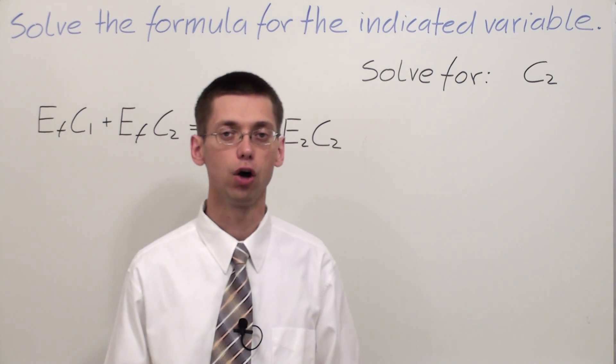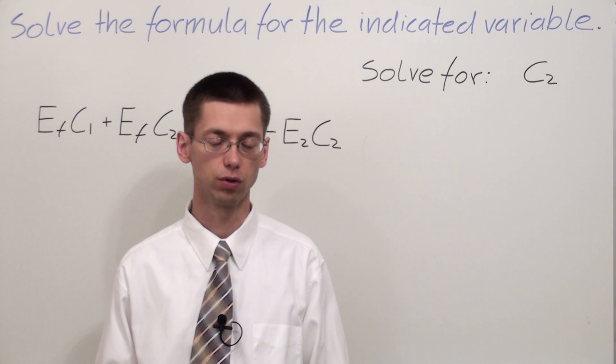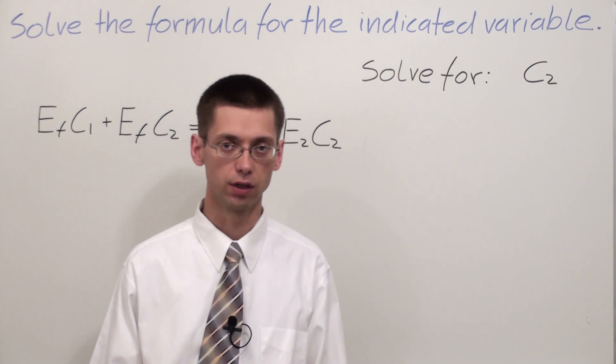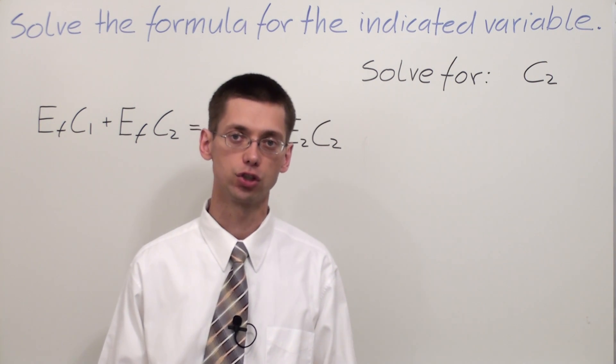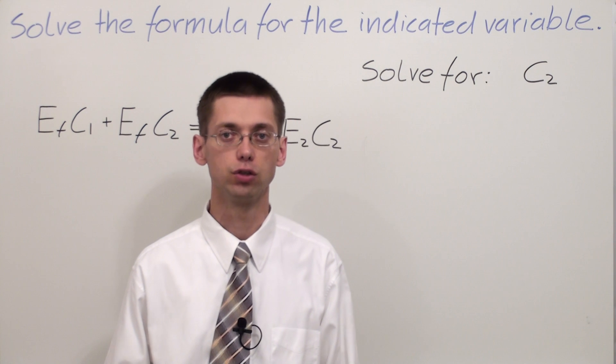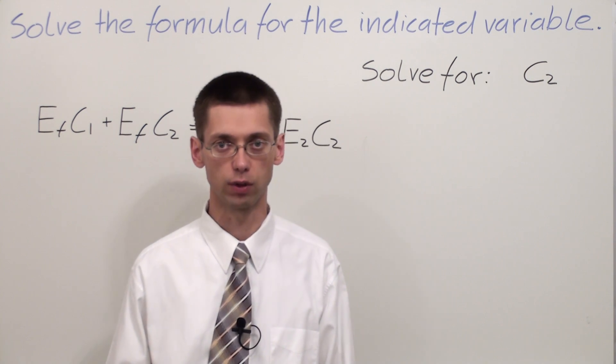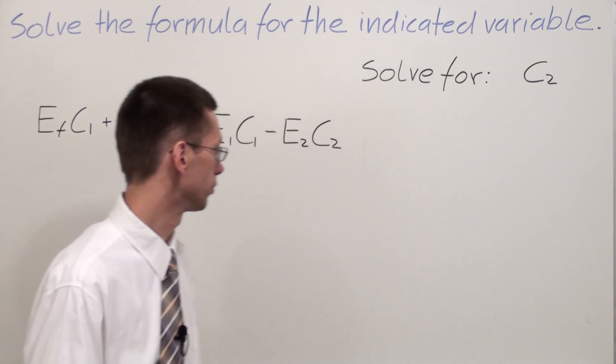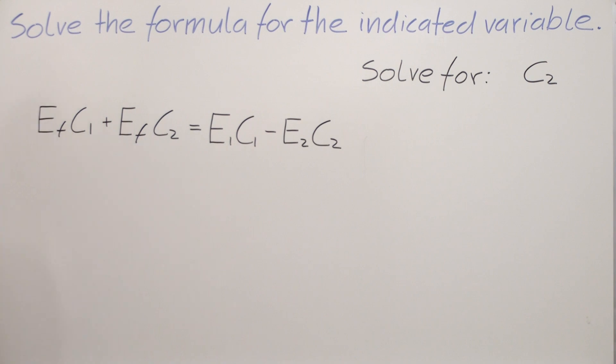We have to collect all terms which contain C2 on the left side of the equation, and everything without C2 has to be moved to the right side of the equal sign. So let's perform the operations.